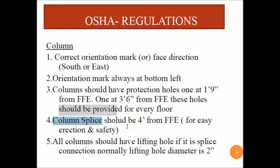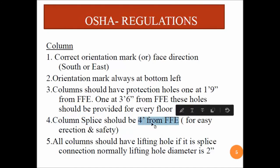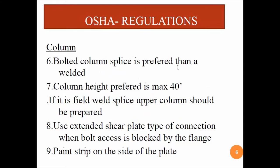A column splice is used in high-rise structures to attach one column above another. The column splice should be at 4 feet from Finished Floor Elevation, meaning 4 feet above the next floor level, so that the splice arrangement can be done safely. All columns should have lifting holes if it is a splice connection; normally the lifting hole diameter is 2 inches. Bolted column splice is preferred over welding.